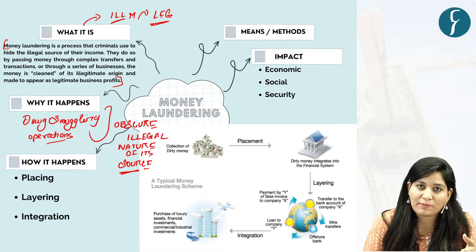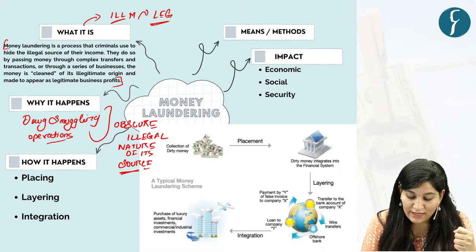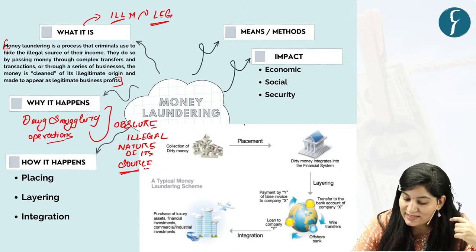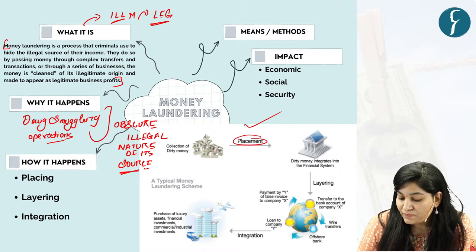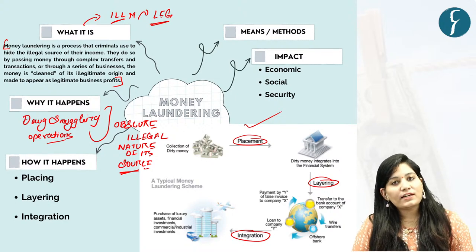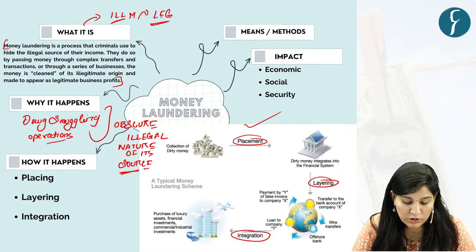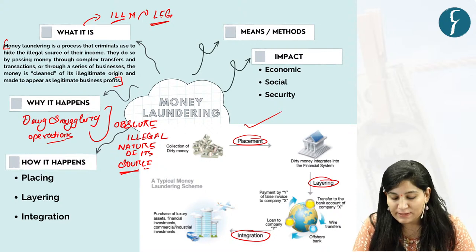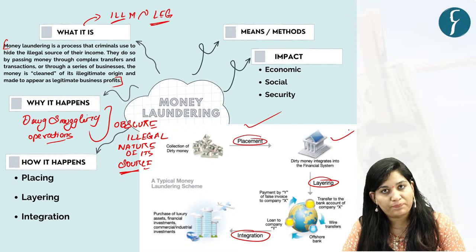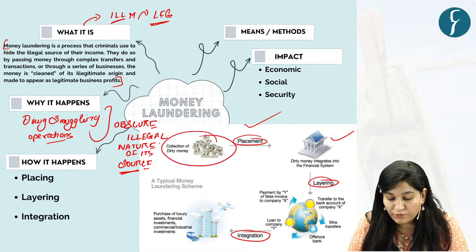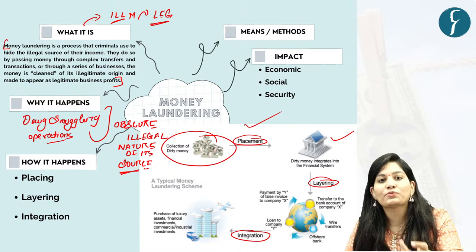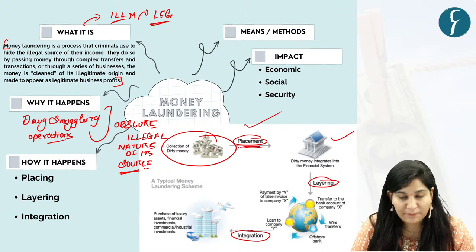The process involved in money laundering entails three phases as you can see in this diagram. The first is placement, second is layering, and third is integration. In the first phase, which is the initial attempt, the amount from criminal activities is placed in a legal financial institution. This process of moving money from illegal activities to legal financial institution is known as placement.